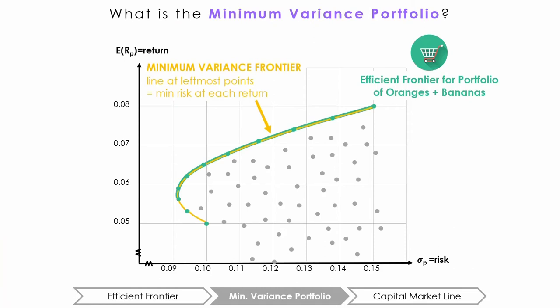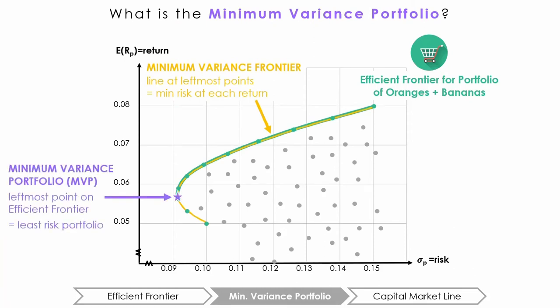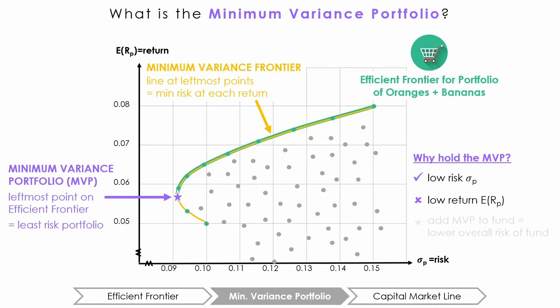There's a special portfolio on the efficient frontier called the minimum variance portfolio. Because it is at the leftmost tip of the arc, it is the portfolio with the minimum amount of risk or variance, hence the name minimum variance portfolio. There are pros and cons to holding it. The most obvious pro is that it has very minimal risk due to choosing risky assets that have low risk themselves and low correlation with each other, which is known as diversification. The con is that it often has a lower return than we could achieve if we were willing to accept more risk. However, the minimum variance portfolio has special significance in portfolio management — it is often used by portfolio managers in combination with other risky assets and portfolios. By adding it to their funds, they can lower the risk of the entire fund.